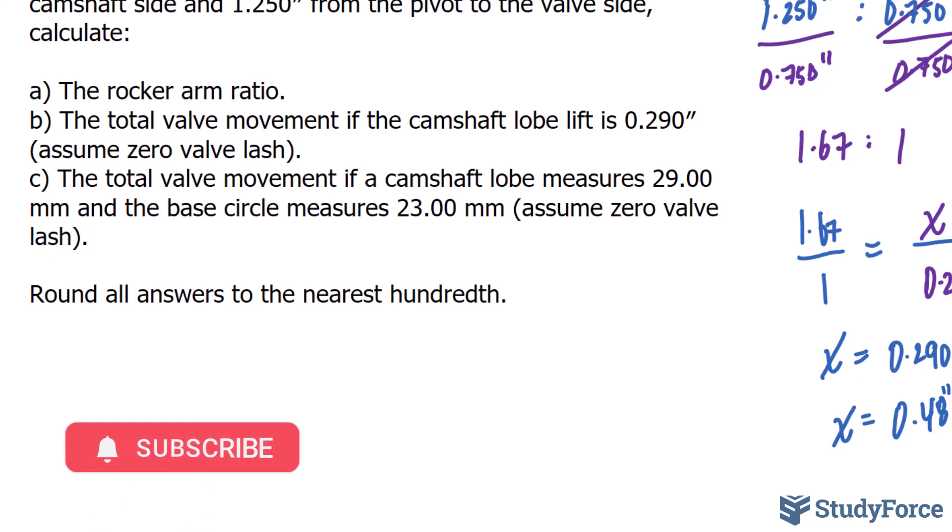And finally, for question C, we're asked to calculate the total valve movement if a camshaft lobe measures 29.00 millimeters and the base circle measures 23.00 millimeters, assume zero valve lash. This question ties in what we learned about calculating the camshaft lobe lift in our previous video to what we're doing right now.